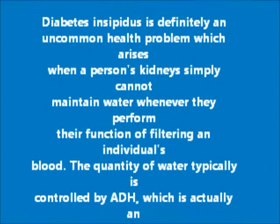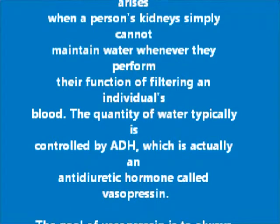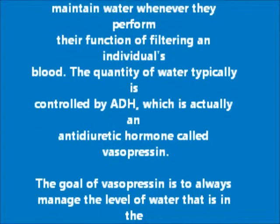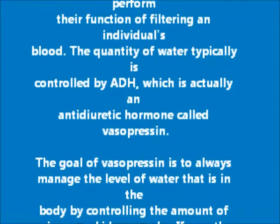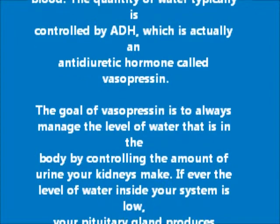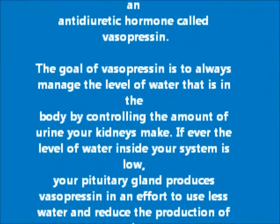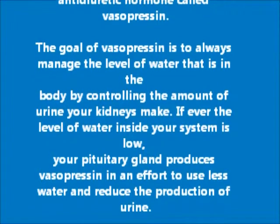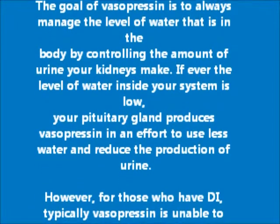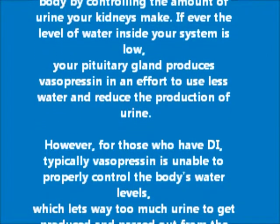The quantity of water is typically controlled by ADH, which is actually an anti-diuretic hormone called vasopressin. The goal of vasopressin is to manage the level of water that is in the body by controlling the amount of urine your kidneys make. If the level of water inside your system is low, your pituitary gland produces vasopressin in an effort to conserve water and reduce the production of urine.